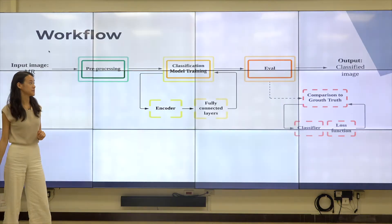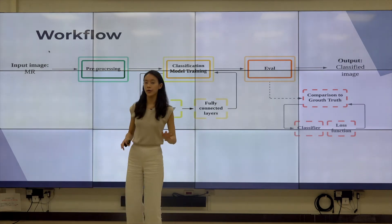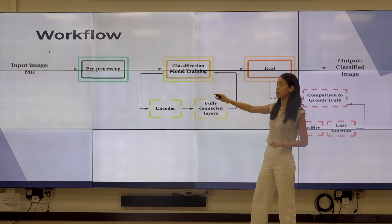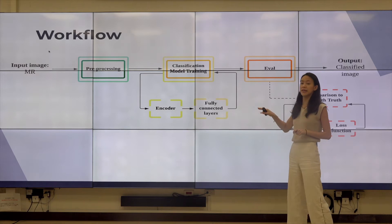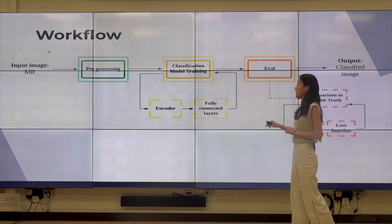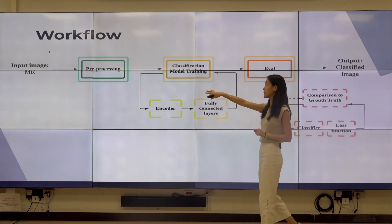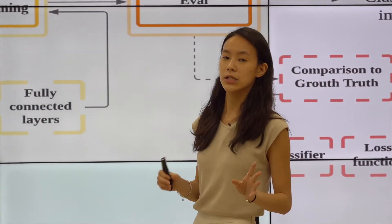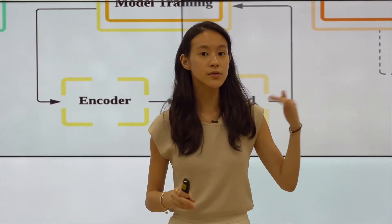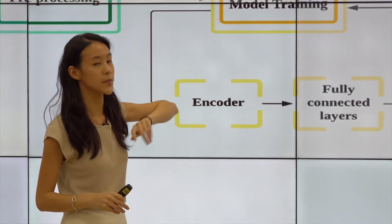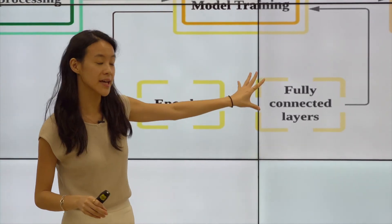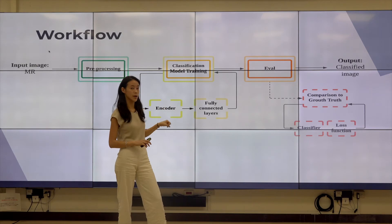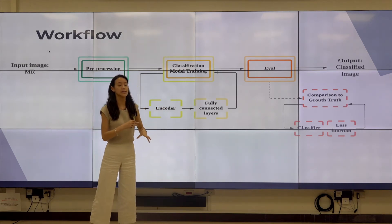Moving on to the fundamental concepts of classification. As a brief overview of the classification workflow: an input MRI image goes through pre-processing steps, then the pre-processed image becomes input for the classification model training. Within model training, we get a prediction — a probability assigned to a certain label. Using the trained model, we input a testing set for evaluation, compare it to the ground truth to find accuracy, and output the classified image.